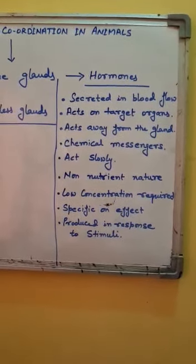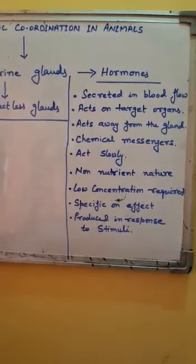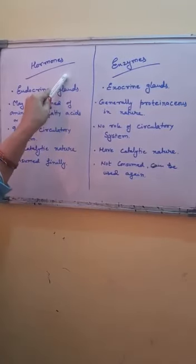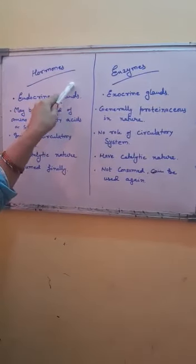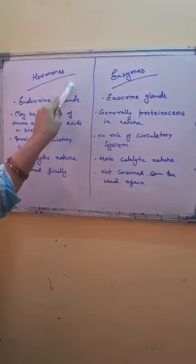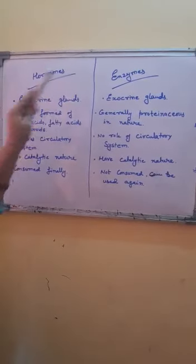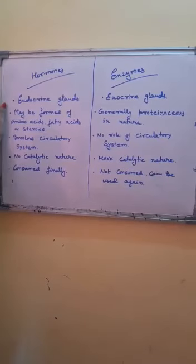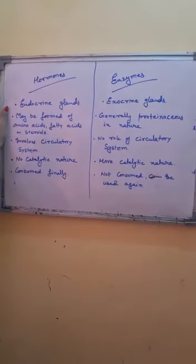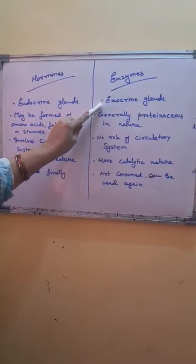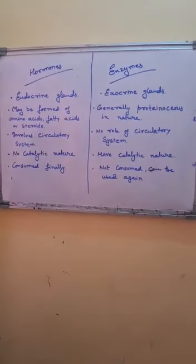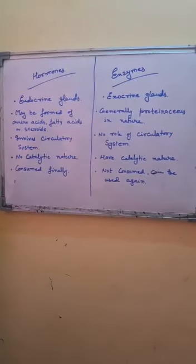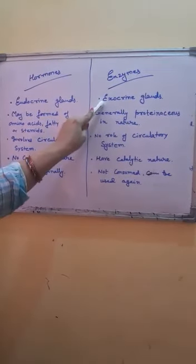We must also understand the differences between hormones and enzymes. Both are produced inside glands in the body and both are of chemical nature. The first and most important difference: hormones are produced by endocrine glands, which are ductless glands, whereas enzymes are produced by exocrine glands.